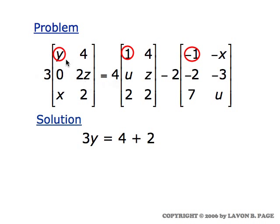On the left, in the row one column one position, we'll have three times Y when we multiply that out. On the right, if we calculate everything out, we'll be multiplying four times this matrix which gives us a four in the row one column one spot, and then minus two times minus one gives us a two, so we wind up with four plus two in that spot on the right. Since the matrices are equal, three times Y — the row one column one entry on the left — must equal four plus two on the right. Three Y equals six, and of course that tells us the value of Y.